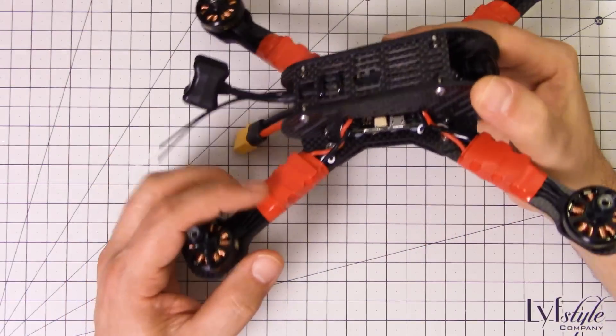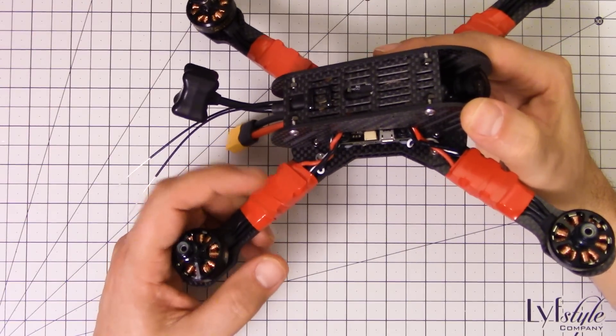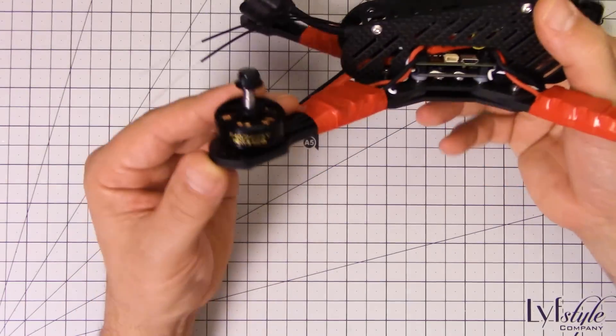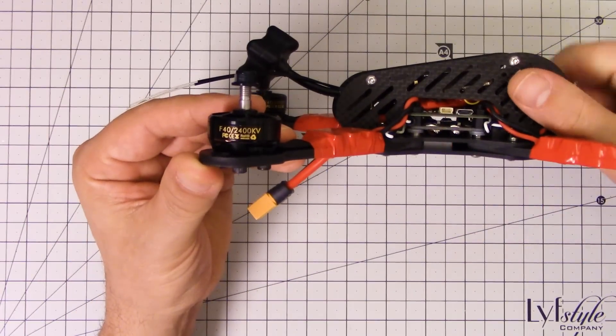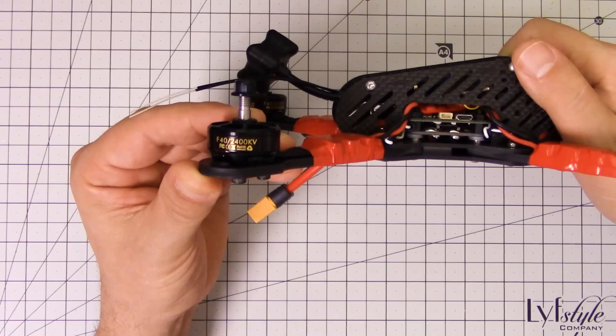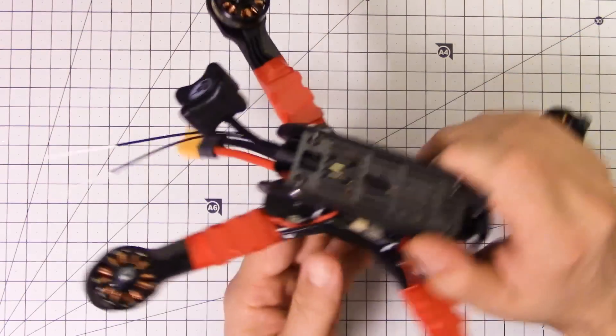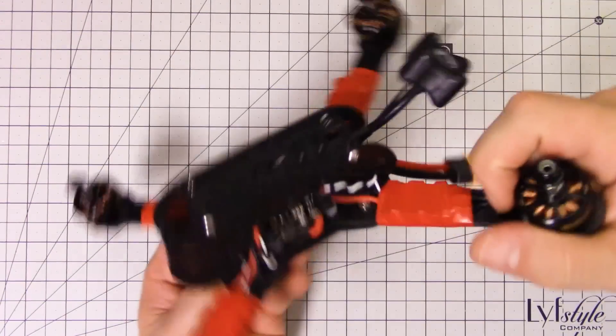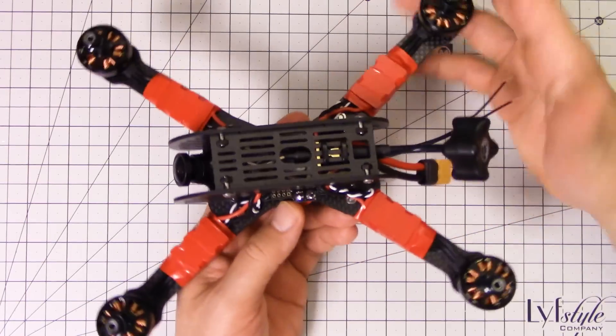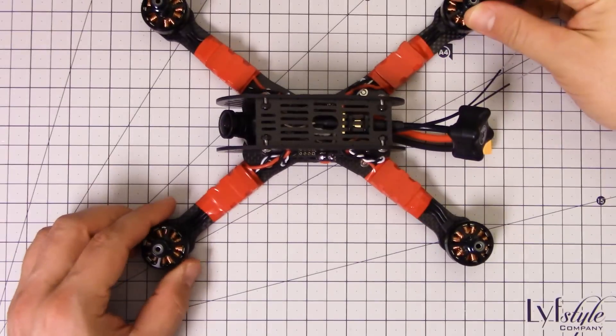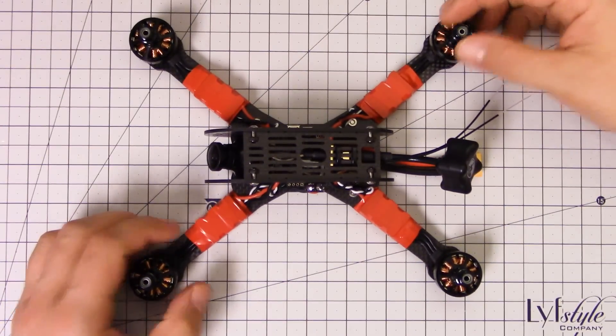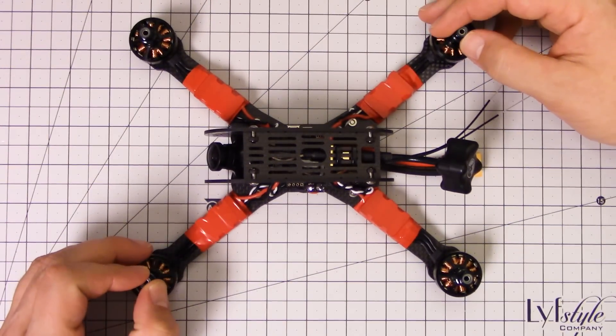It's got TBS Team Black Sheep Bulletproof 25 amp ESCs. I have got T-Motor F40s on here. I believe they have switched and are using the Cobra Champion motors now if you order it from the site. And of course TBS Triumph antenna and this is a TBS Unify video transmitter. So very, very high-end gear here.